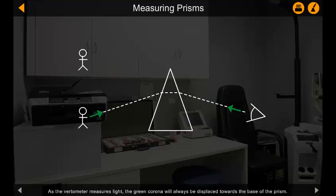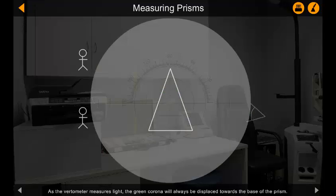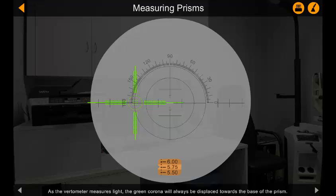As the vitometer measures light, the green corona will always be displaced towards the base of the prism.